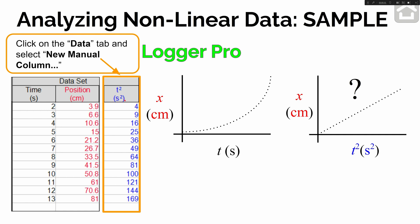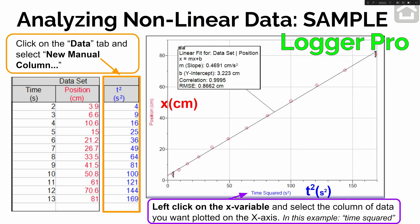If you're graphing this in Logger Pro, to add a new column for these calculations, go to the Data tab at the top of your screen and select New Manual Column. You can name it 'time squared,' give it the symbol t squared, and put 's squared' in the units box. Once you do that, you'll have a position column and a time squared column. In the original graph, left-click on the variable 'time' on the x-axis and select the new time squared column. This gives you the position versus time squared graph, which does look fairly linear — confirming the original graph was truly a top-opening parabolic relationship.